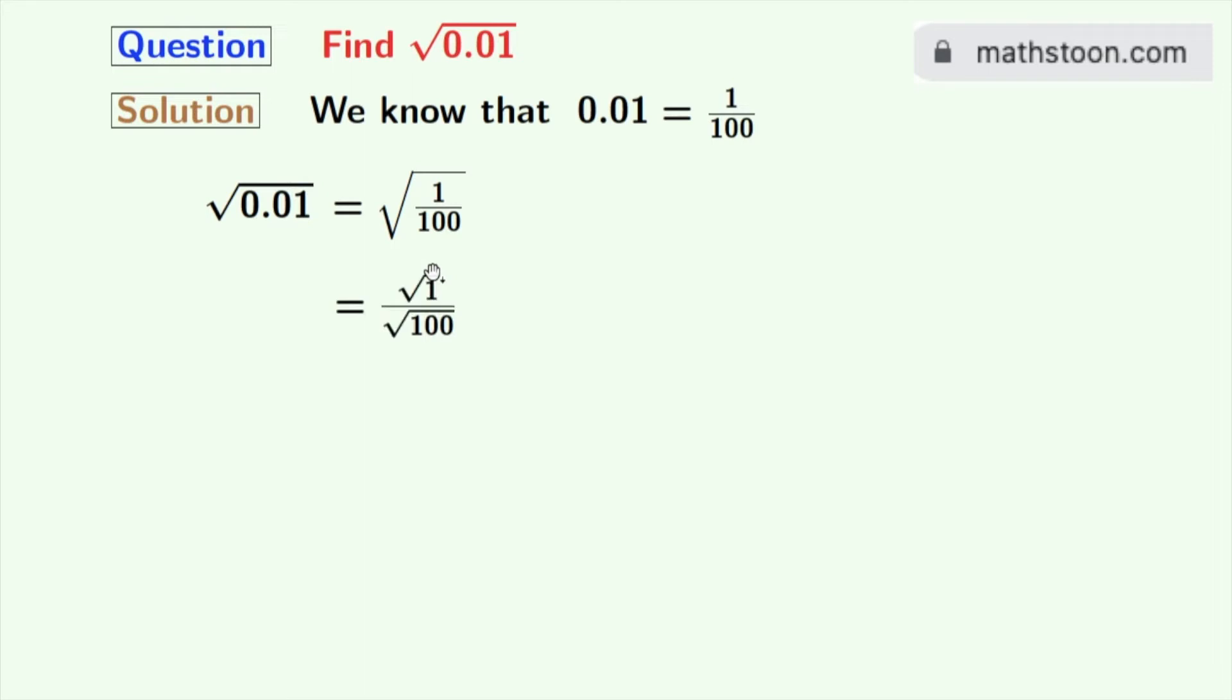We write it as square root of 1 by square root of 100, using the rule that square root of a by b is equal to square root of a by square root of b. Here, a is 1 and b is 100.